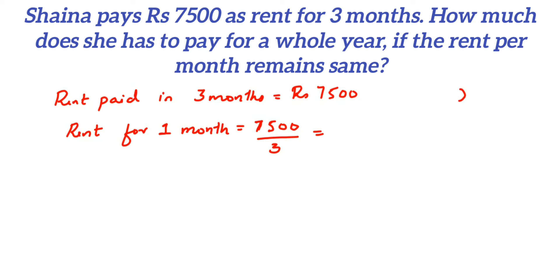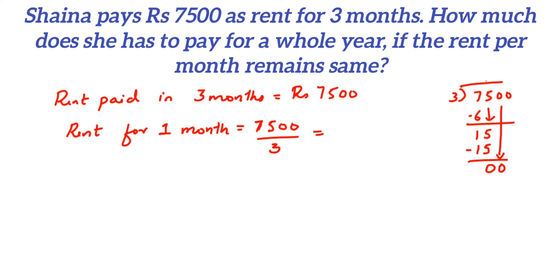So how did we get this? You can divide the number or you can cancel it. Doing the division: 3 into 7 gives 2 with remainder 1; bring down 5 to get 15, 3 fives are 15 so we get 5; drop the 0, 3 into 0 is 0; drop the next 0, 3 into 0 is 0. So the answer is 2500 — it is not 1500, I am sorry, it is 2500. So Rs. 2500 is the rent she is paying for 1 month.